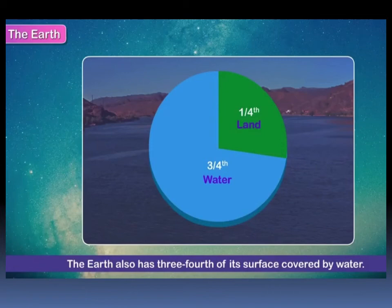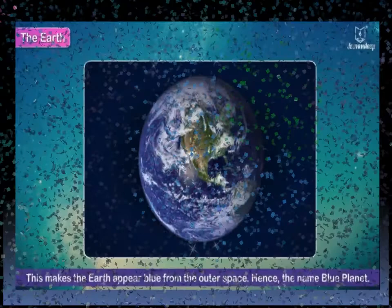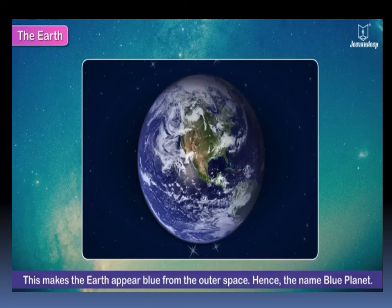The earth has three-fourths of its surface covered by water and one-fourth portion of the earth is land. This makes the earth appear blue from outer space, hence the name given is blue planet.